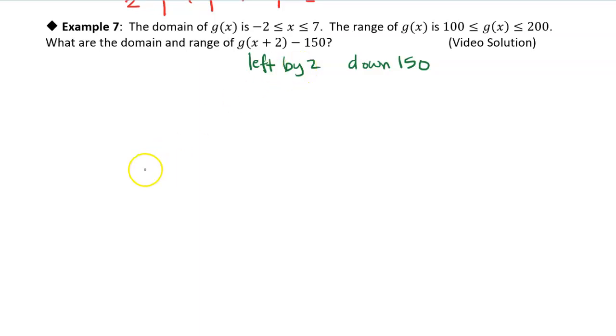So let's first look at the domain. Now I know the input to the function, this g of x function, is only defined for x values between negative 2 and 7. But now the input to the function is x plus 2, so x plus 2 has to be between negative 2 and 7.